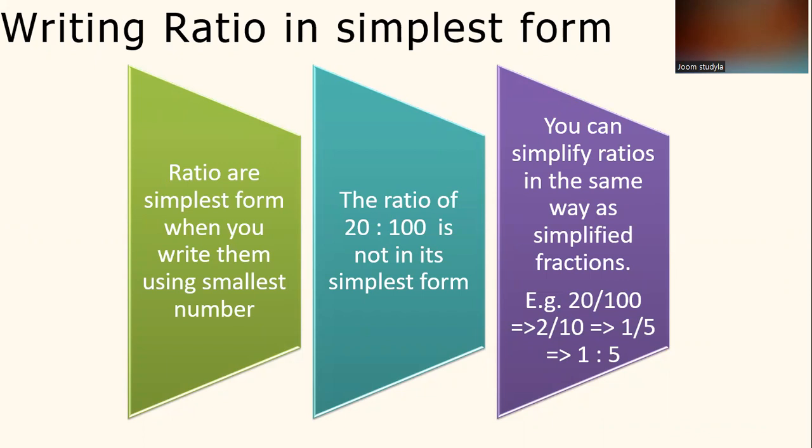The ratio of 20 to 100 is not in its simplest form. Finally, you can simplify ratios in the same way as simplified fractions. Example, 20 over 100, when you simplify it, becomes 1 to 5.